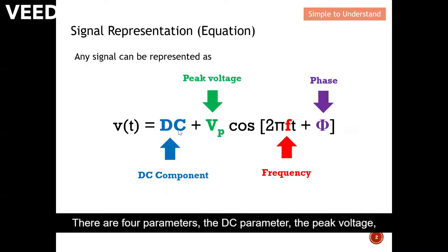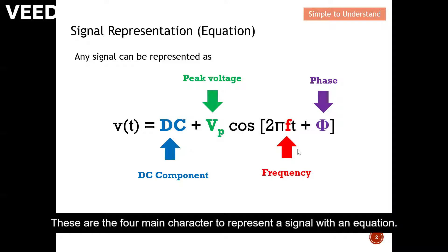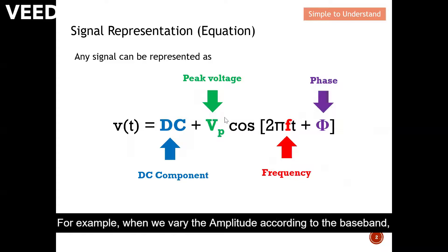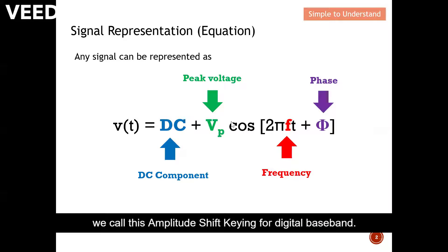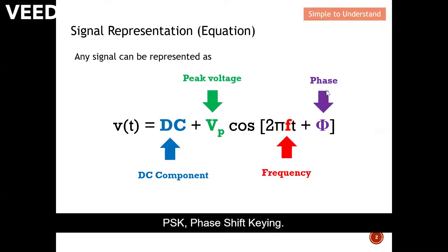There are four parameters: the DC parameter, the peak voltage, the frequency, and the phase. These are the four main characteristics to represent a signal with an equation. When we vary the amplitude according to the baseband, we call this Amplitude Shift Keying (ASK). When we modify the frequency, we call this Frequency Shift Keying (FSK). When we alter the phase, we call this Phase Shift Keying (PSK).